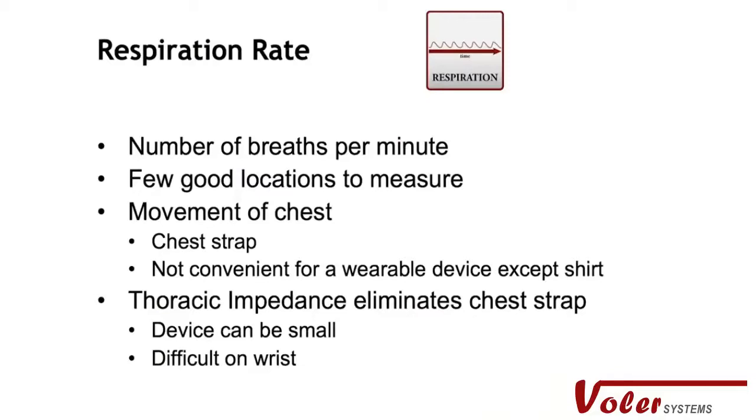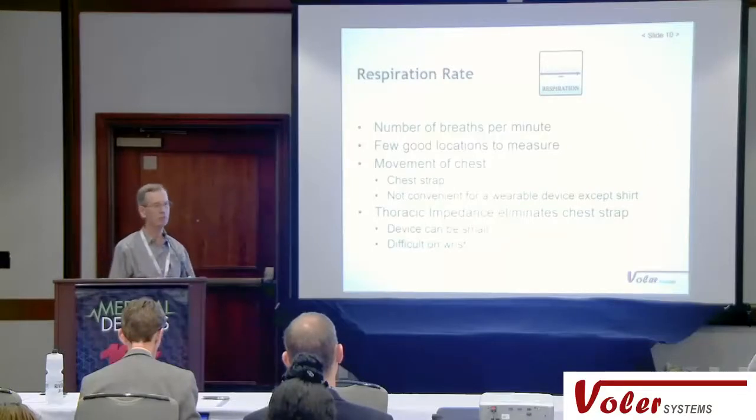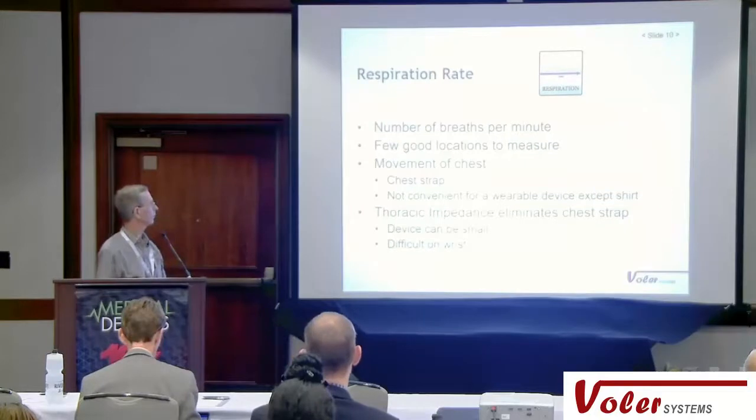Respiration is another very important parameter. The standard is to put on a chest strap, which is easy to measure but inconvenient for a wearable. Another way is thoracic impedance — you measure the impedance of the chest, which changes as you breathe in and out. But this needs to be on the chest. People would like to put it on the wrist, but I haven't seen it actually work, because the wrist has a large impedance — your arm — between it and the chest, which makes that signal much smaller and very difficult to detect.